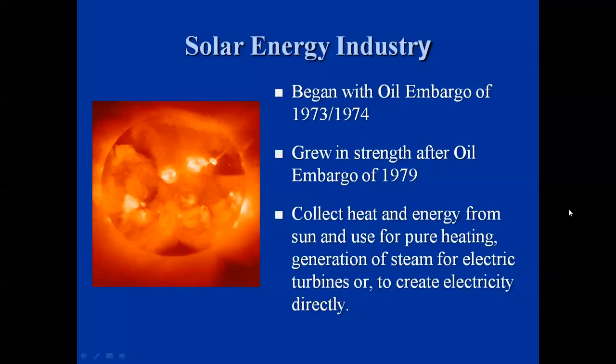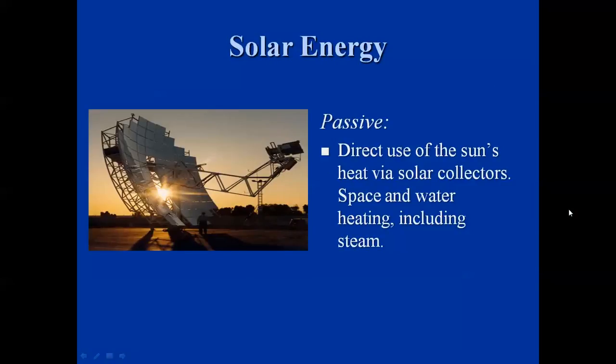In a lot of cases it's used to heat water, even for space heating. We generally have two types. Passive solar energy uses the direct heat of the sun with solar collectors that can direct the heat to a particular area. It's primarily used for space and water heating and can also be used to create steam. Some panels on office buildings or residences may simply be circulating water for hot water heating, while photovoltaic ones are producing power.